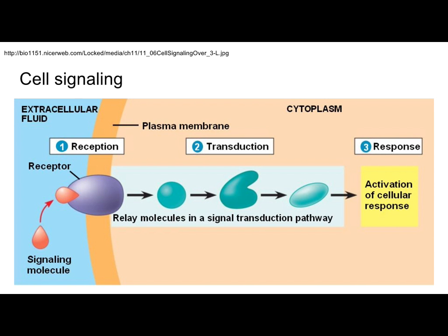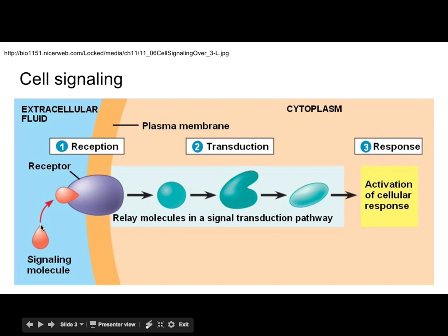As a refresher, cell signaling turns out to require three steps — you should be able to recite these in your sleep. You're going to have some type of signal; hopefully it's a chemical, but it doesn't need to be. It's going to bind to some type of receptor. If the signal cannot enter the cell — cannot make it through the cell membrane — the receptor will be found in the cell membrane. If the signal is capable of entering the cell, the receptor will be found somewhere inside the cell.